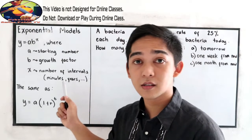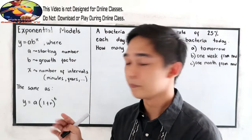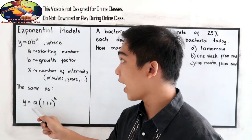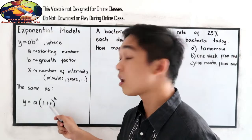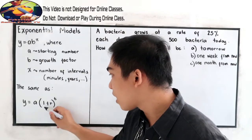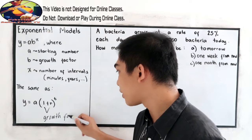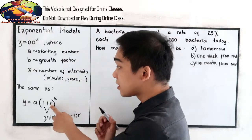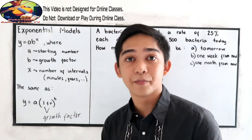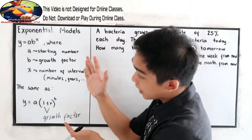The number of intervals can be in minutes, years, days, weeks, etc. The formula is the same as y is equal to a times the quantity 1 plus r raised to t, where a is our starting point, 1 plus r is our growth factor. That means r is our rate, our percent, and t is our time or our intervals.